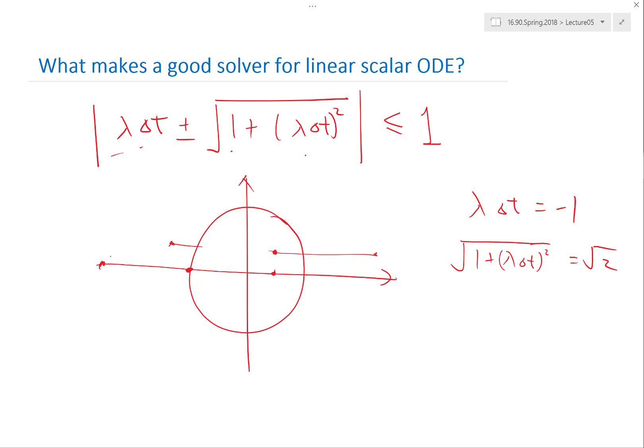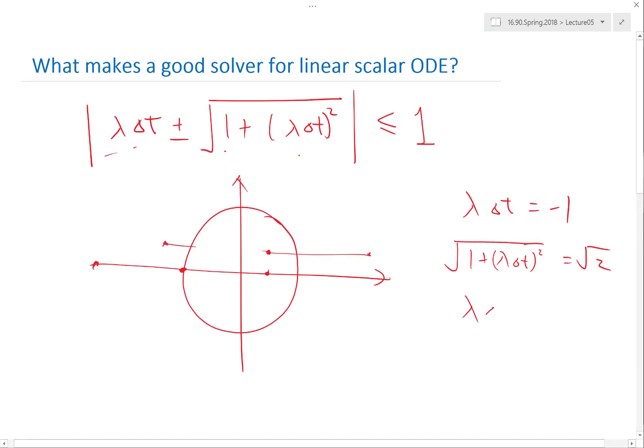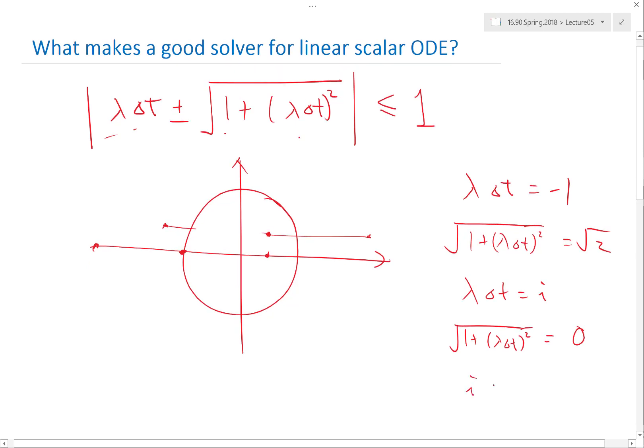Can lambda be imaginary? Yes. If you have imaginary lambda, maybe it'll fit. Let's try. So if lambda delta t equal to i, then square root of this is going to be what? Zero, right. So then I have i plus minus zero, so basically I have this point. Oh cool, so the scheme actually works for purely imaginary numbers for lambda.